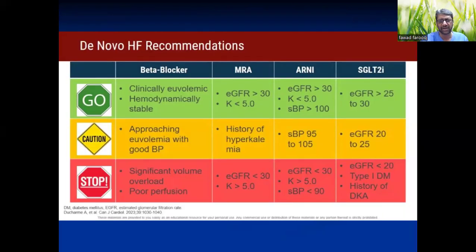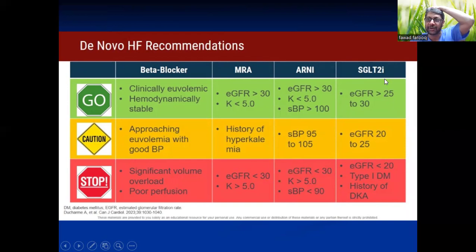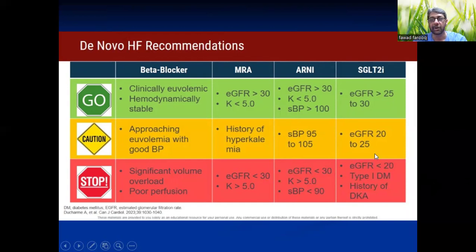This slide gives you an idea about various drugs — what's green, what's yellow, what's red for them. For beta blocker: if your patient is euvolemic and hemodynamically stable — green. Approaching euvolemia with good perfusion pressure — yellow, you can. But significant volume overload and poor perfusion — no beta blocker. For MRA: GFR and potassium should be monitored. ARNI: renal function and blood pressure are important parameters. SGLT2 can be offered to a lot of patients — no issue with rate or rhythm, only renal function and a few important contraindications: Type 1 diabetes, DKA, or recurrent UTI. Otherwise, many patients can be offered SGLT2.